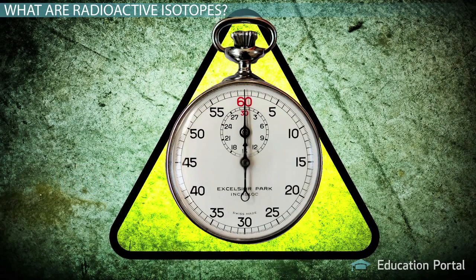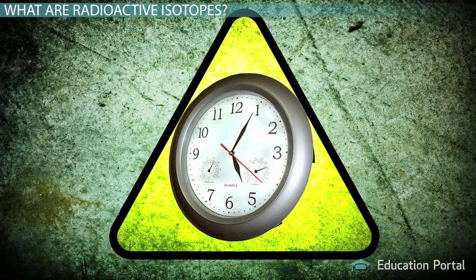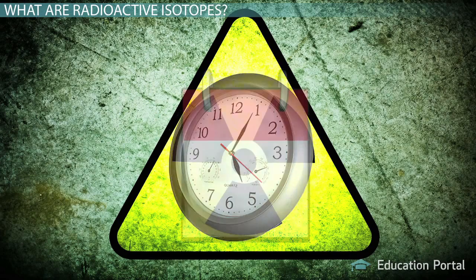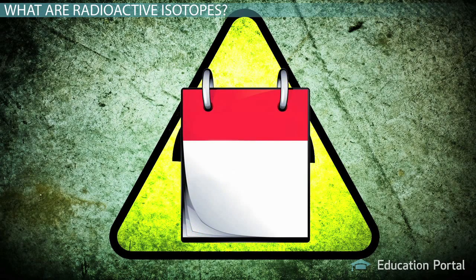Some radioactive isotopes convert incredibly quickly, with lifetimes measured in seconds or less, while others are moderately fast, with lifetimes measured in minutes to hours to days, while some are much slower, with lifetimes measured in decades, centuries, or millennia.